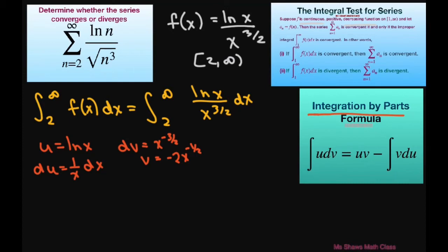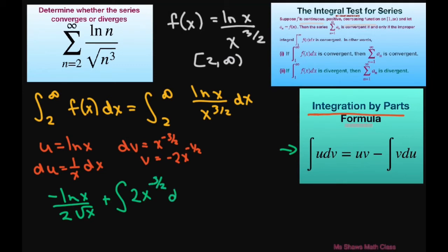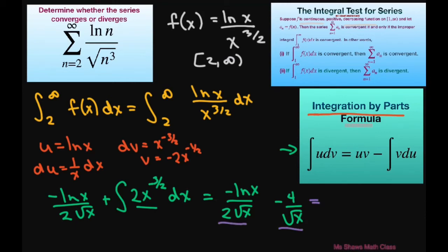Substituting this in using our formula, we're going to get negative ln of x divided by 2 square root of x, plus the integral of 2x to the power of negative 3 halves dx. This equals negative ln of x divided by 2 square root of x, and this part is just going to be negative 4 divided by square root of x. We can simplify with a common denominator and write this as negative ln of x minus 8, divided by 2 square root of x — basically multiplying 4 by 2.